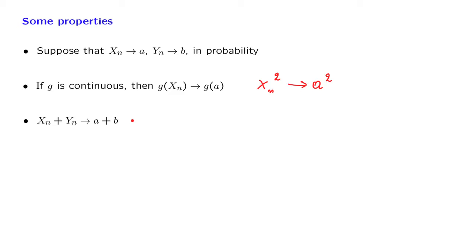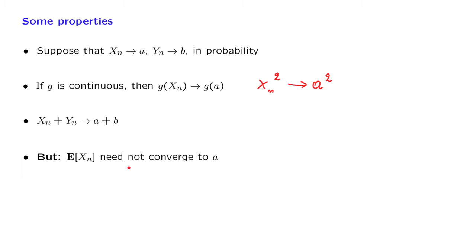These properties tell us that, in some sense, convergence in probability is not a very different notion from ordinary convergence. We will not prove those properties at this point, but they are useful to know. However, there is an important caveat: xn might converge to a certain number in probability, but the expected value of xn does not necessarily converge to that same limit. So convergence of random variables does not imply convergence of expectations, and we will be seeing an example where this convergence does not take place.